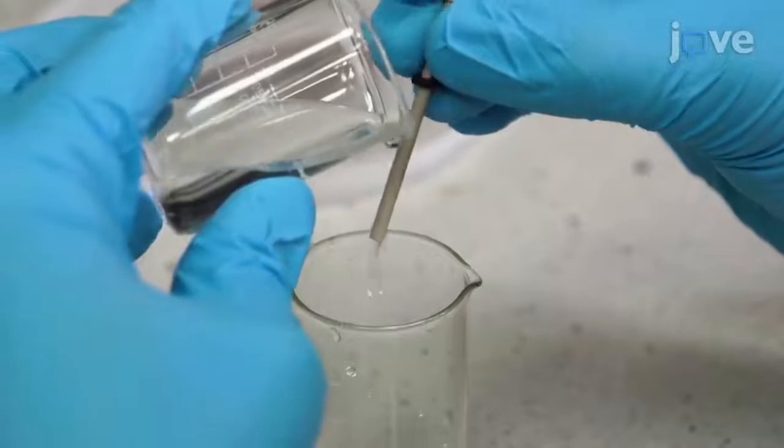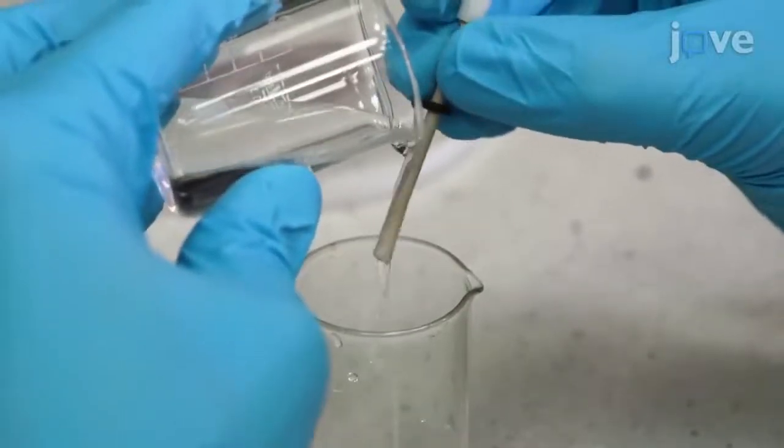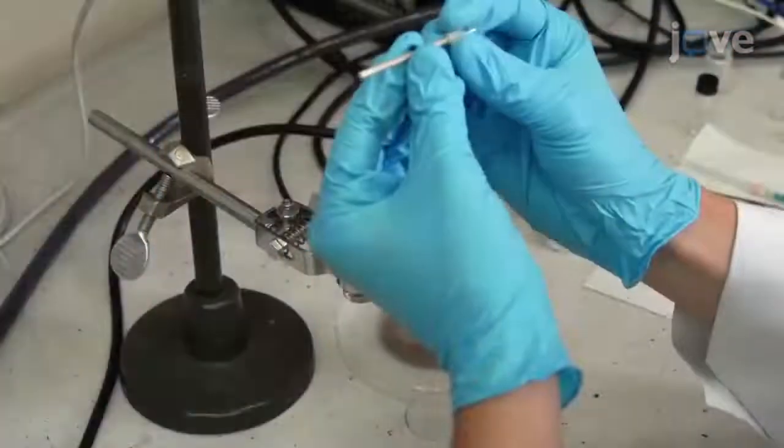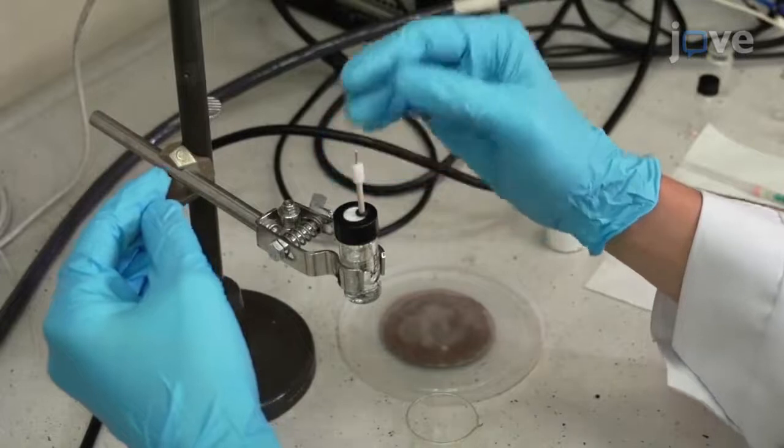Afterwards, rinse the polished working electrode with DCM three times to remove residual alumina particles. Then, insert the polished electrode into the electrochemical vial through the gasket cap.